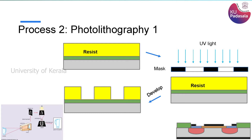The advantage is that if you want to pattern this material, you can expose the photoresist selectively to light. When light falls on photoresist, it causes a chemical reaction. There are two types: positive photoresist and negative photoresist. In positive photoresist, when light falls on it, it dissociates and you can wash that area away. In negative photoresist, the areas where light is exposed become hard, and the unexposed areas can be washed away.